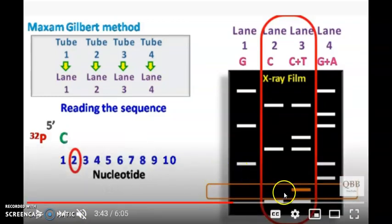Next, the second lane consists of a single band in C plus T, but there is no band representing C in lane 2. So the second nucleotide will be T.